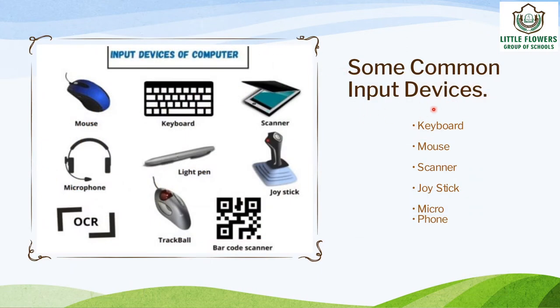A keyboard is the most common and popular input device, which helps us to input data into the computer. A keyboard is used to give input by typing numbers, letters, and special characters. Next is the mouse. A mouse is used to send instructions to the computer with the click of a button. It is also used to draw pictures and select objects, and it is called a pointing device.